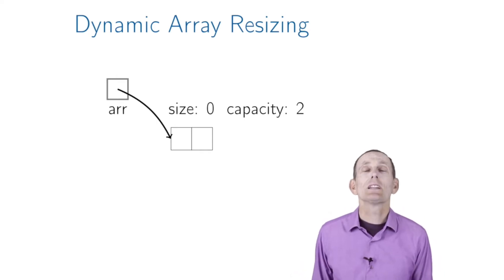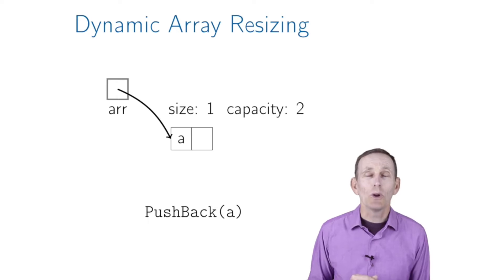Let's look at an example. Say our dynamically allocated array has a capacity of 2, but we're not using any elements yet, so it's size 0, and arr points to that dynamically allocated array. If we do a pushback of 'a', that's going to put 'a' into the array and update the size.